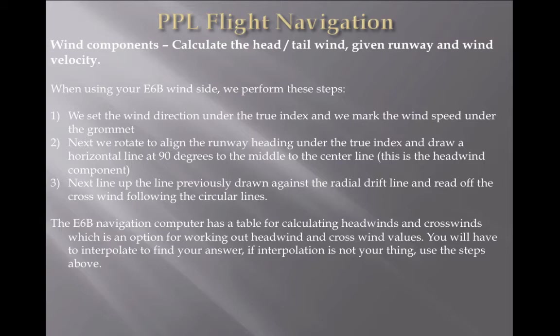That sounds all very complicated, but on most E6B flight computers you'll find a table for calculating headwinds and crosswinds. They've given variations in increments of 10s or 20s, which means you're going to need to interpolate. If you know how to do this, you've got no problem at all. Interpolation is just roughly working out — wet finger in the air — what half, a third, or a quarter of the two prominent markings would give you. But if interpolation is not your thing, use the steps: set the wind direction under the true index, mark the wind speed under the grommet, then rotate to align the runway heading under the true index and draw a horizontal line at 90 degrees. Then line up that line against the radial drift line and read off the crosswind.